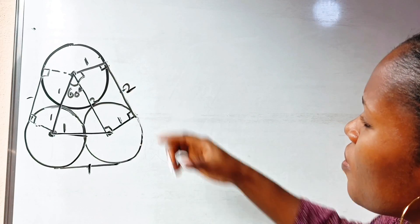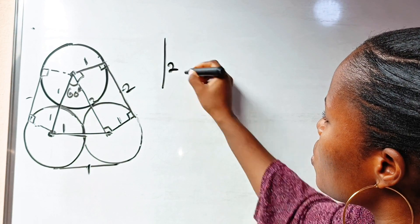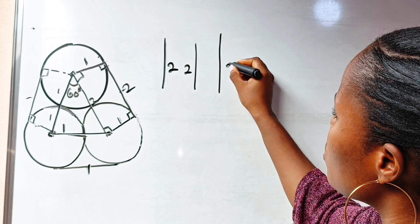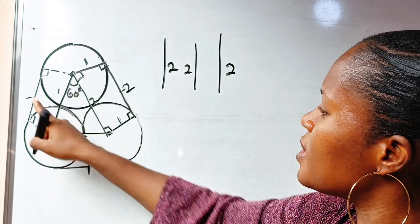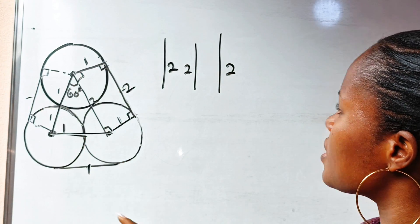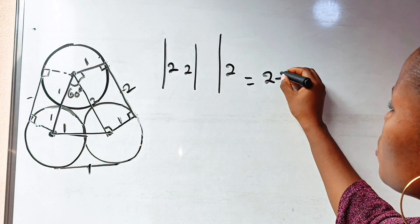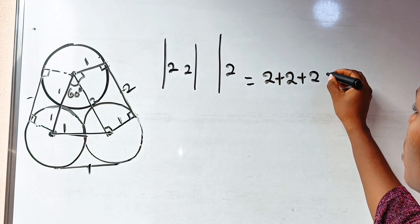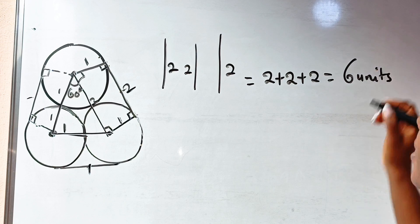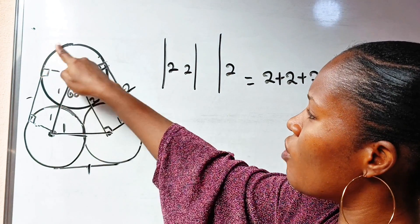We have found the value of x: each straight segment is 2. So three straight segments give us 2 + 2 + 2, which equals 6 units. Now let's talk about the curved arc portions.